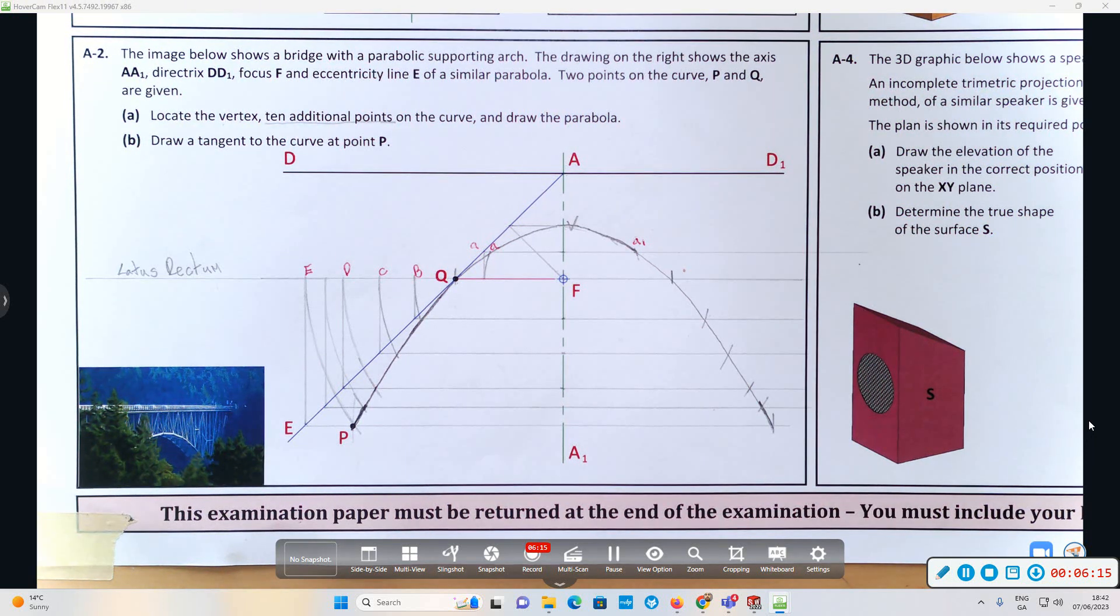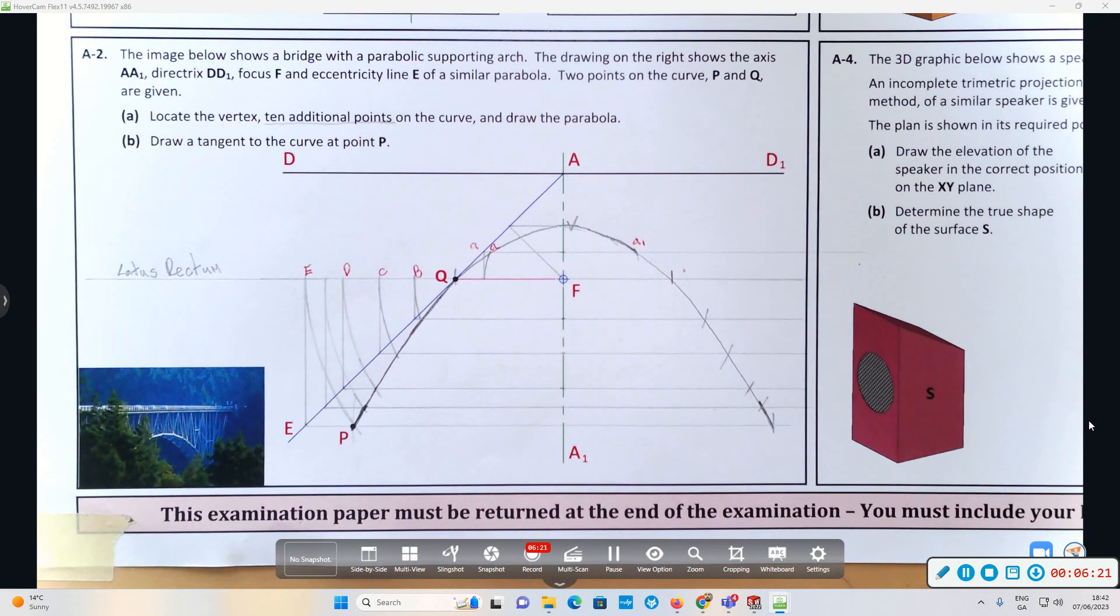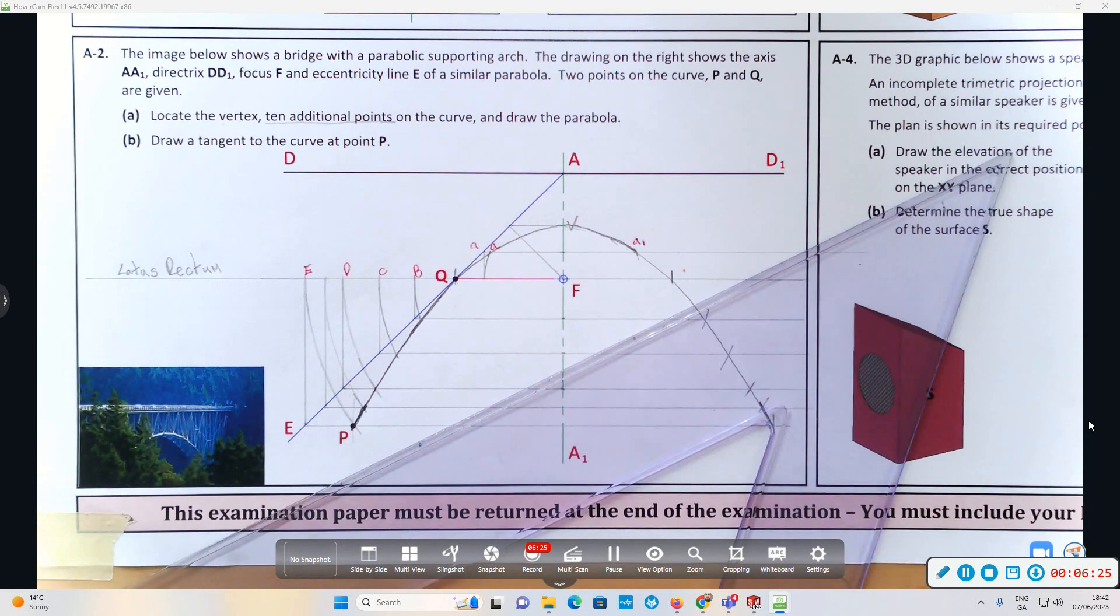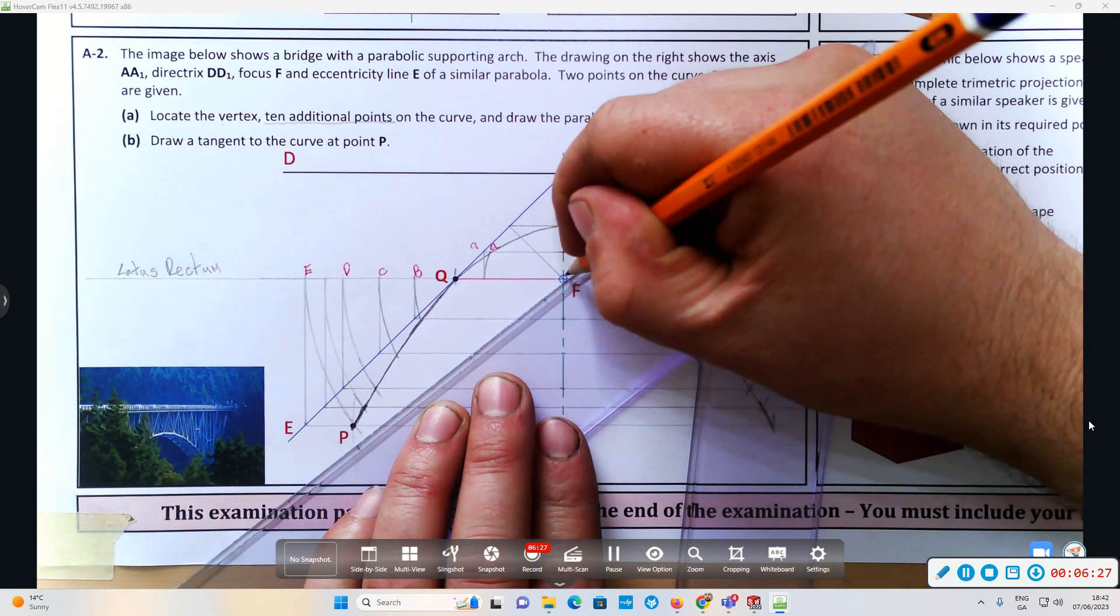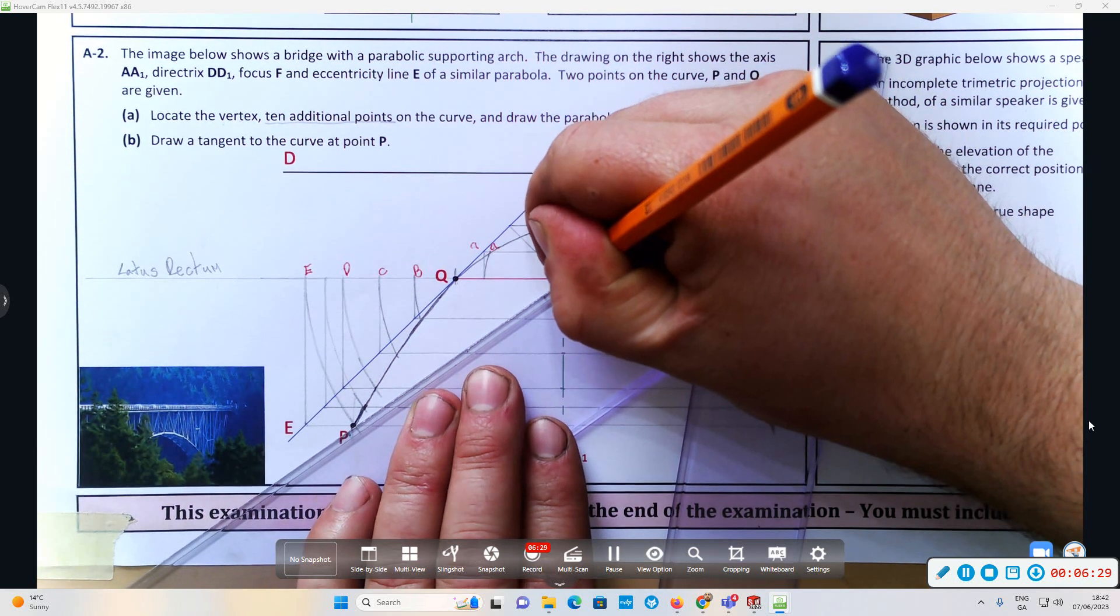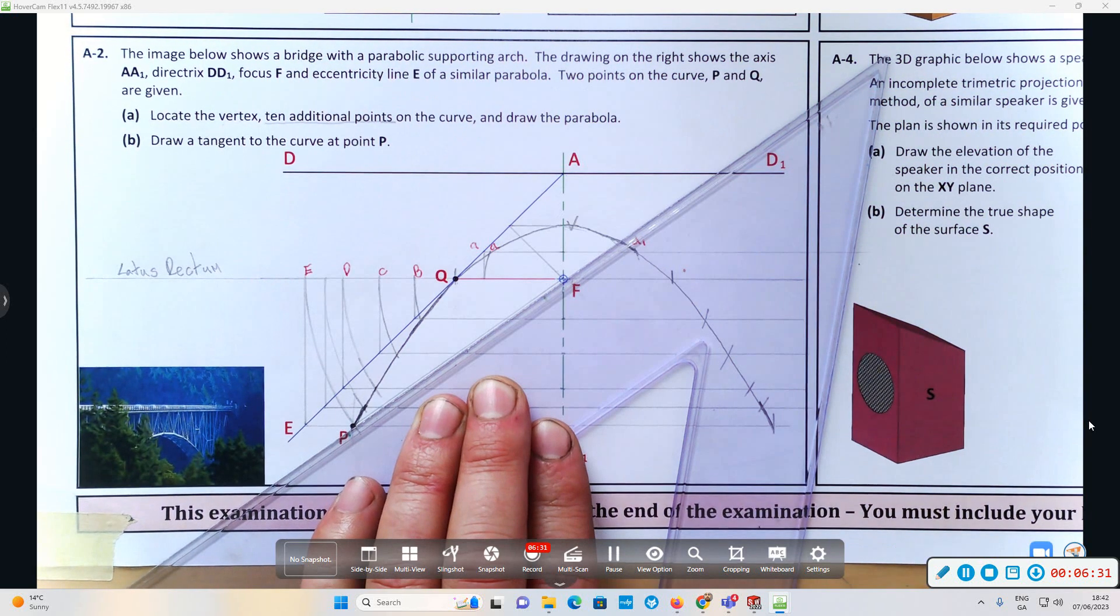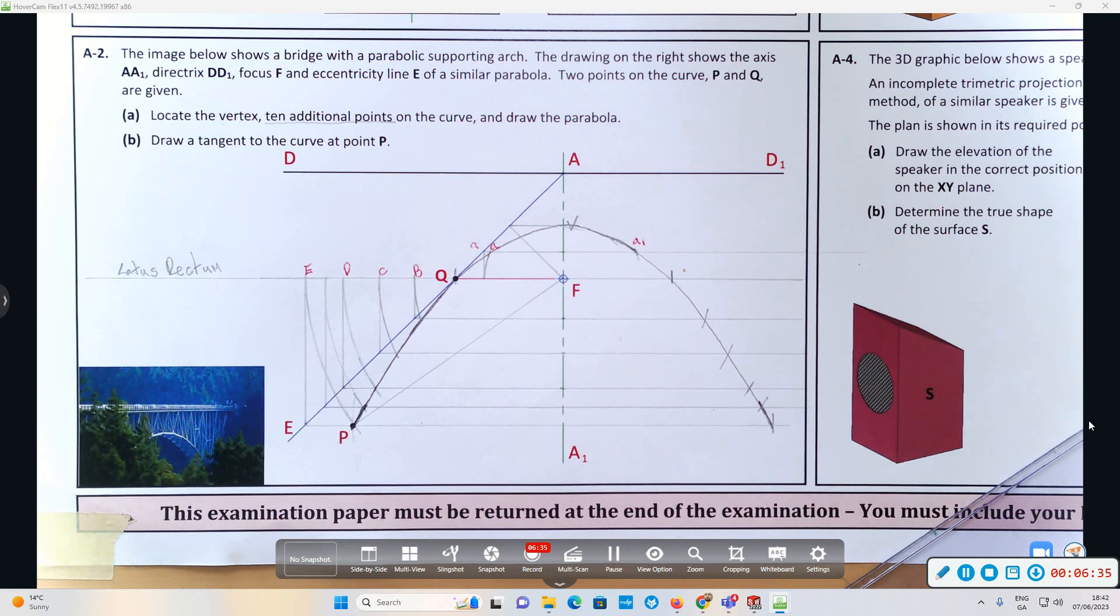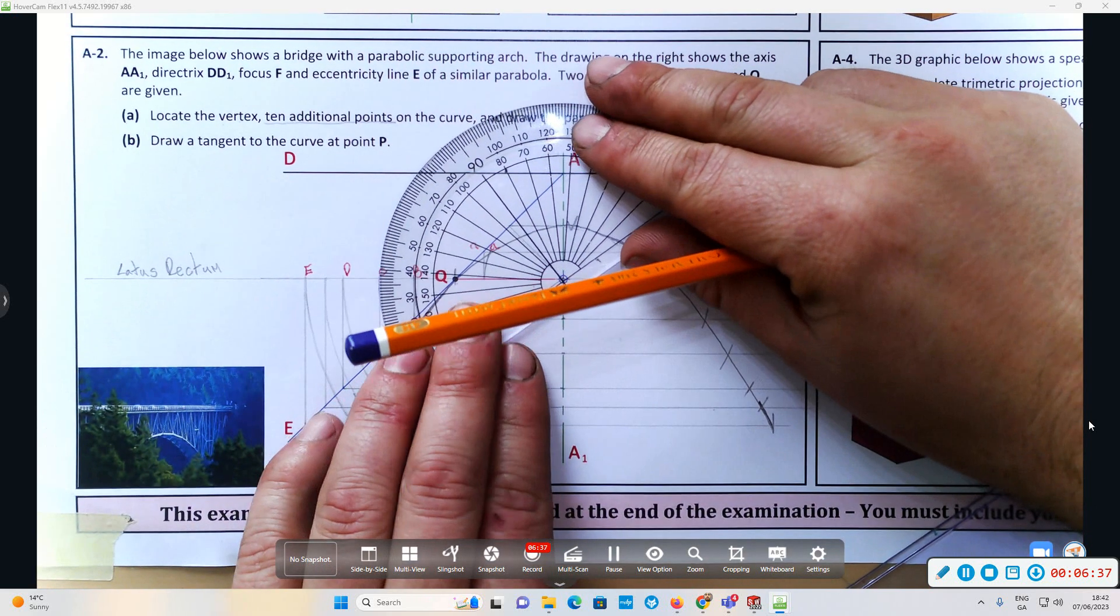Draw a tangent to the curve at point B. The way we're going to do it is a method common to all conic sections. I'm going to join T to F. Now I'm going to draw a line at 90 degrees to line TF from the focus S.